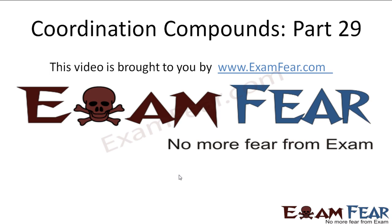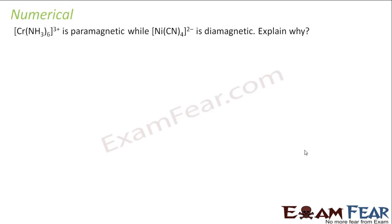Hello friends, this video on coordination compounds part 29 is brought to you by examfier.com. The problem is: Cr(NH₃)₆³⁺ is paramagnetic and Ni(CN)₄²⁻ is diamagnetic — explain.